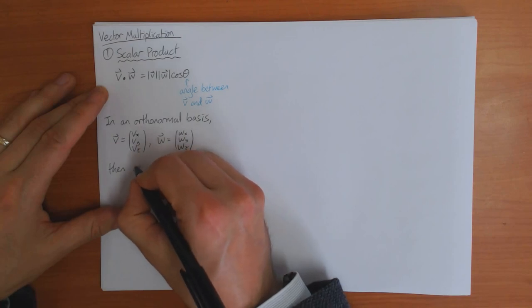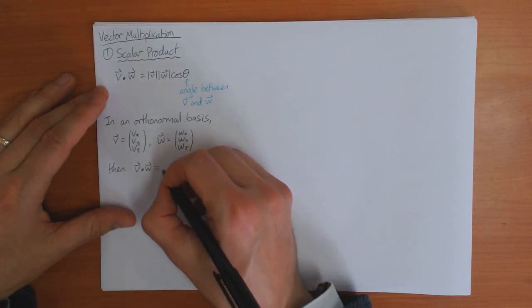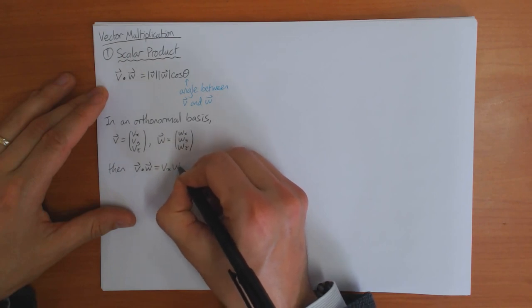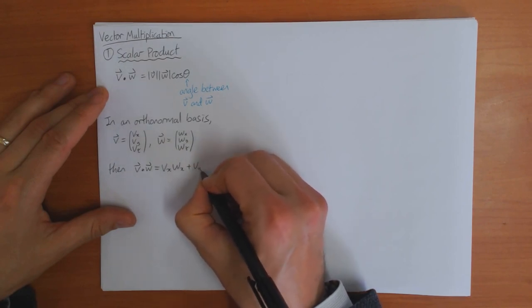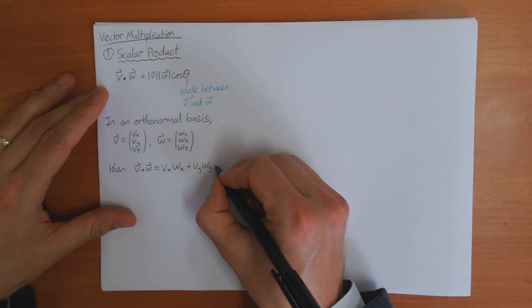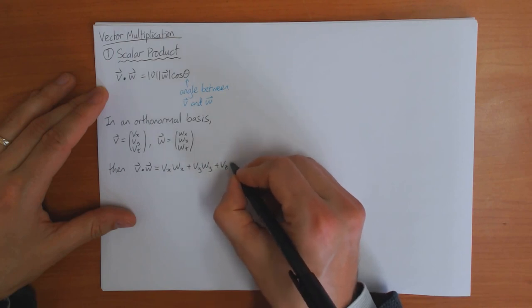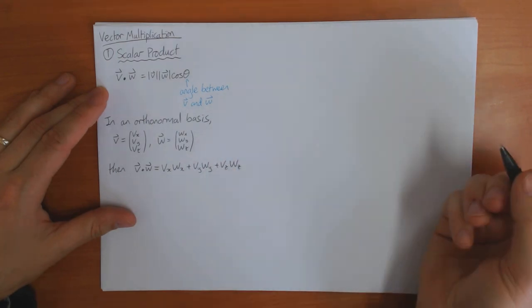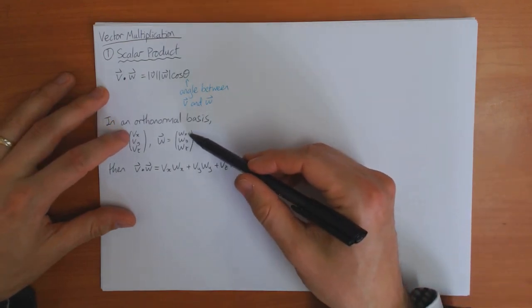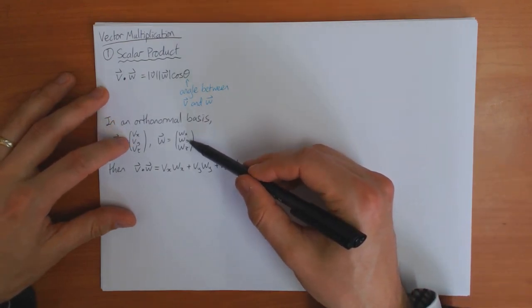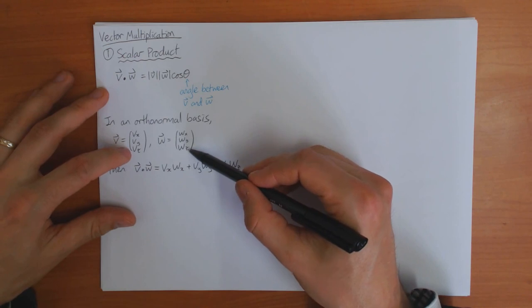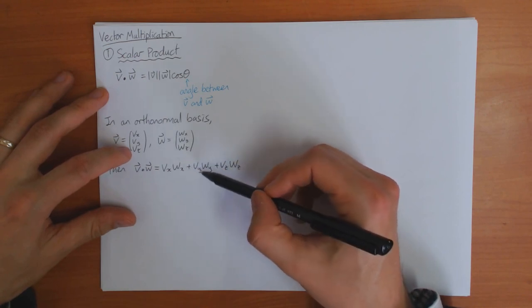Then you can show that v dot w is equal to vx times wx plus vy times wy plus vz times wz. In other words, you multiply the x components together, the y components together, and the z components together, and then add them all up.